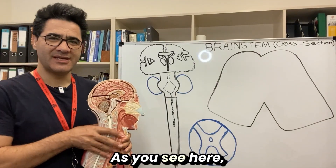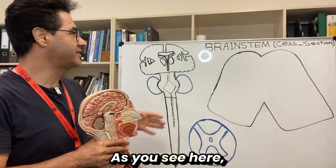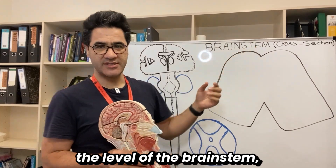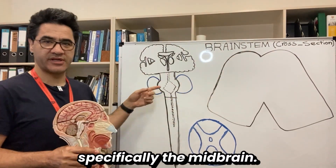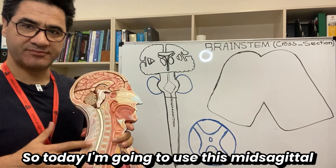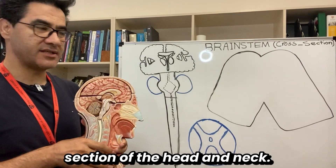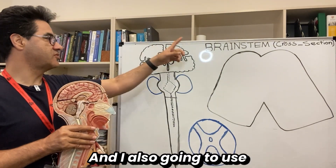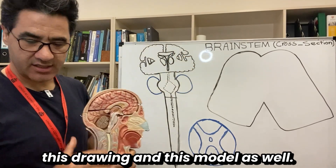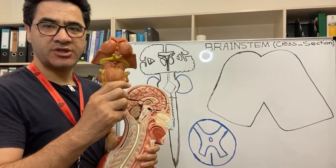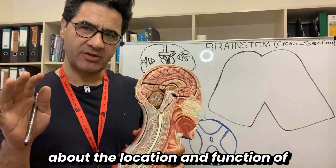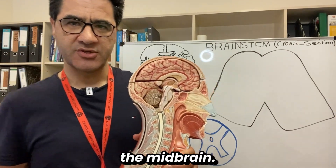Hi everybody. As you see here, I'm going to talk about a cross-section at the level of the brainstem, specifically in the midbrain. Today I'm going to use this mid-sagittal section of the head and neck, and also this drawing and this model. First I'm going to give you a big overview about the location and function of the midbrain.